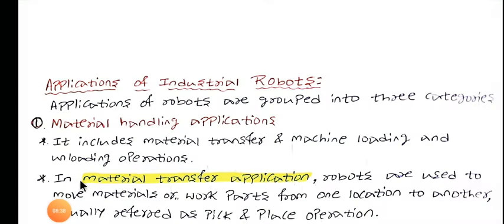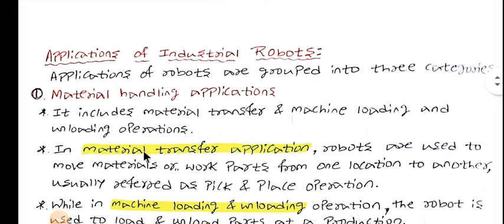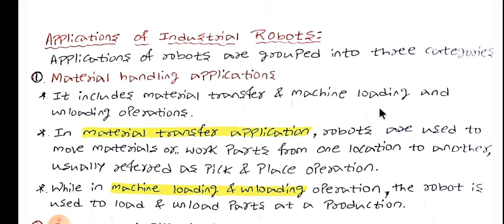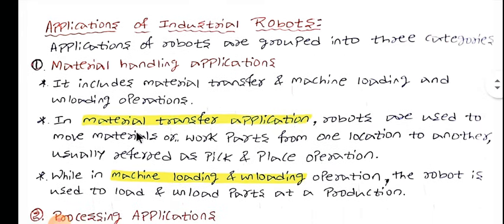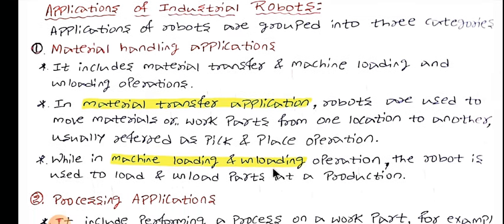Now we will see the applications of industrial robots. The applications are grouped into three categories. The first category is material handling, which includes material transfer and machine loading and unloading. In material transfer applications, robots are used to move material or work parts from one location to another — usually referred to as a pick and place operation.